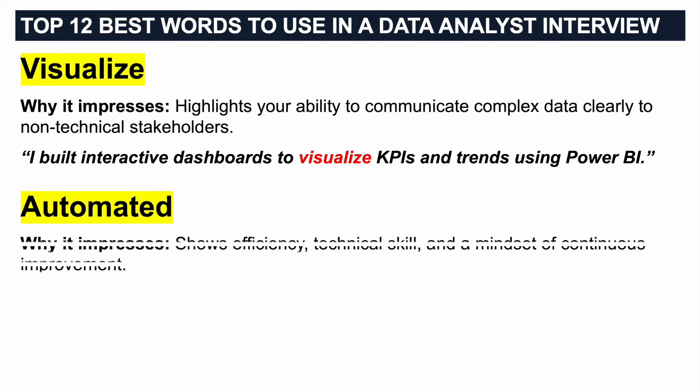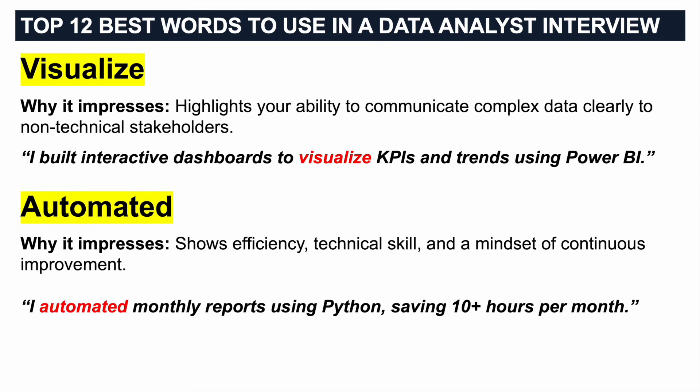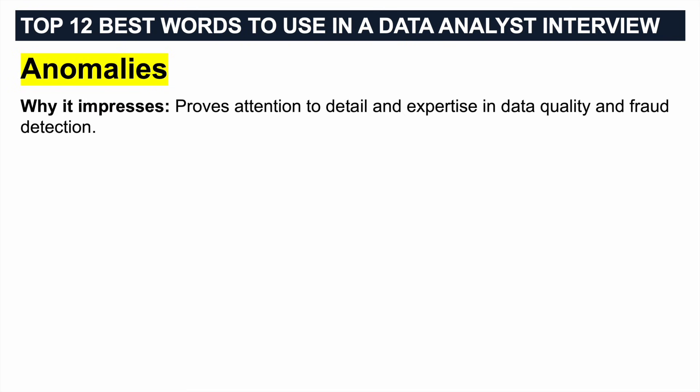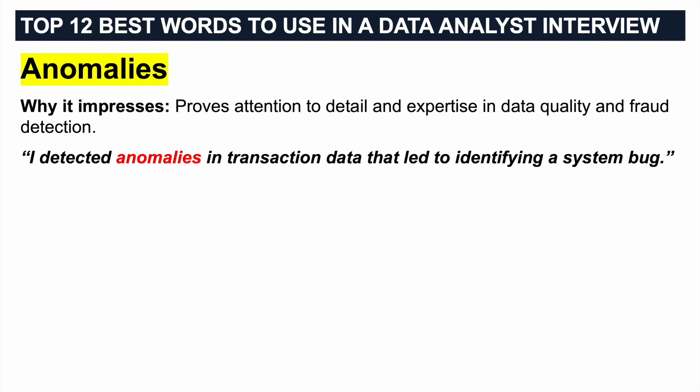Next word: AUTOMATED — a great one to use. It's impressive because it shows efficiency, technical skill, and a mindset of continuous improvement. You could say: 'I automated monthly reports using Python, saving over 10 hours per month.' You could also use the word ANOMALIES. Why this impresses in a data analyst interview — it proves attention to detail and expertise in data quality and also potentially fraud detection. You could say: 'I detected anomalies in transaction data that led to identifying a system bug.'